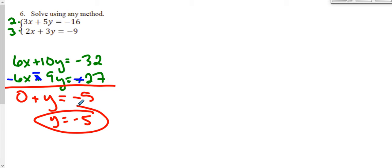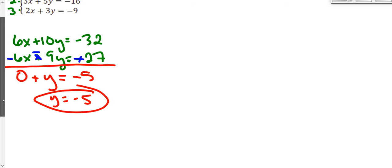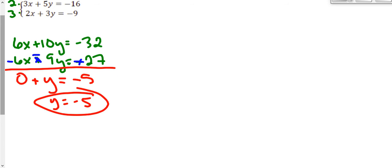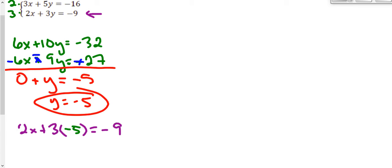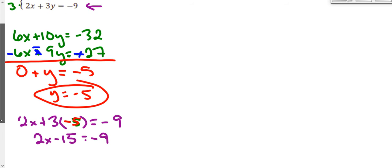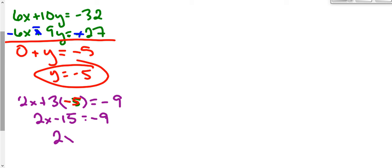Now all I have to do is plug that back into either one of my original functions to find my x value. I'll plug it into the bottom equation because it has smaller numbers: 2x plus 3y equals negative 9, and y is negative 5. So 2x minus 15 equals negative 9. Adding 15 to both sides gives 2x equals positive 6, and dividing by 2 tells us that x is 3.